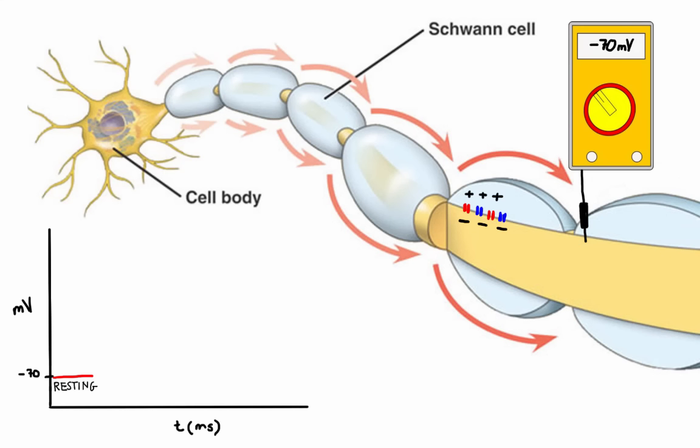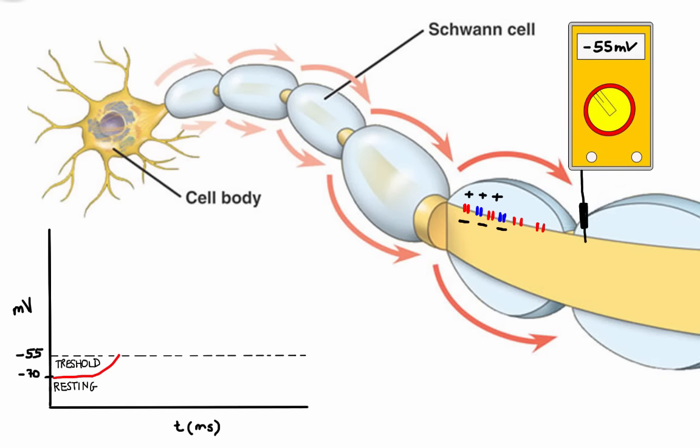Now a nerve impulse starts when pressure or other sensory inputs disturb a neuron's plasma membrane to the point that the potential difference reaches a threshold voltage of about negative 55 millivolts. This causes hundreds of sodium channels in that region of the membrane to open briefly. This in turn allows positively charged sodium ions to flow inside the cell membrane.